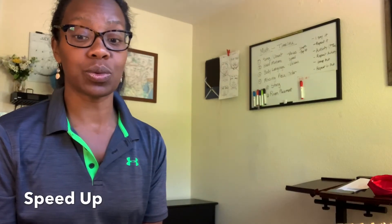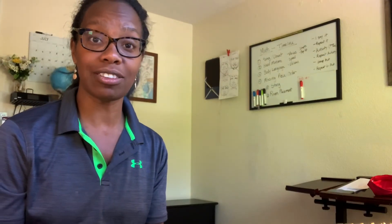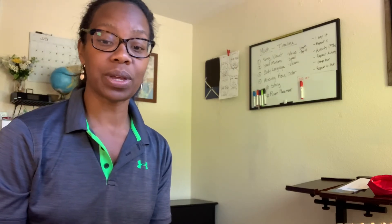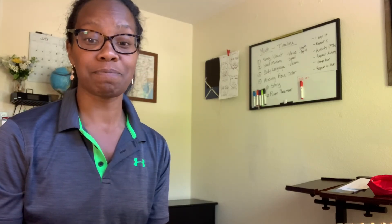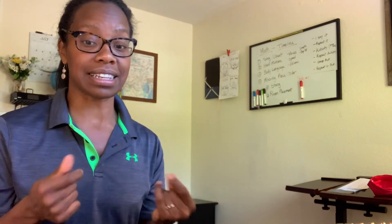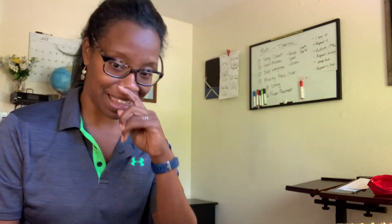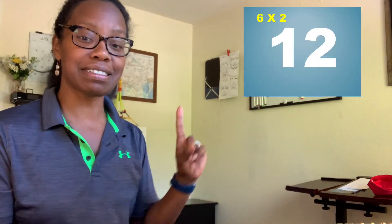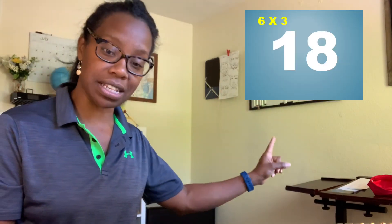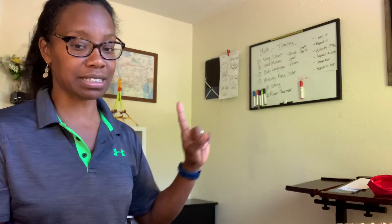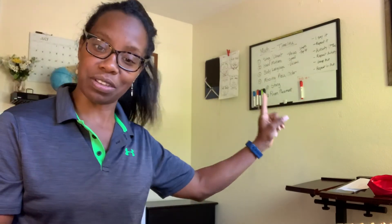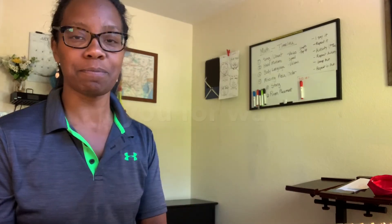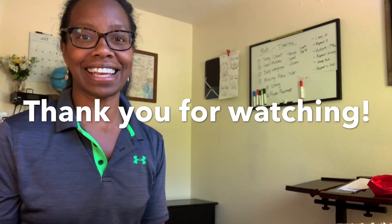Now we're going to try to say the full equation and say it as fast as we can all the way to the end. Six times one is six, six times two is 12, six times three equals 18, six times four equals 24, six times five equals 30, six times six equals 36 — and we're going to try to do it as fast as we can all the way to the end. Very good. Thanks, guys.